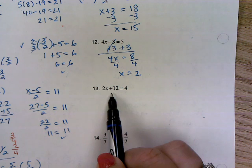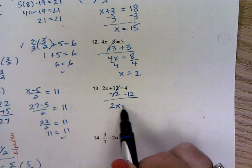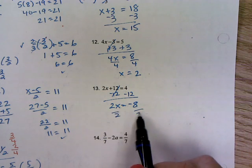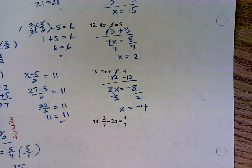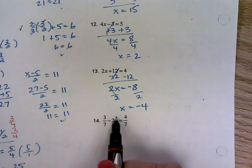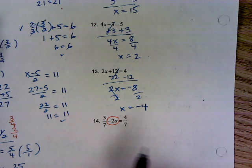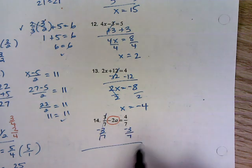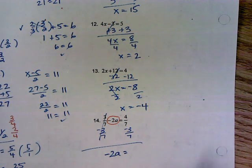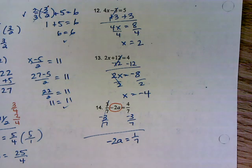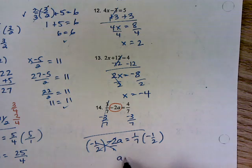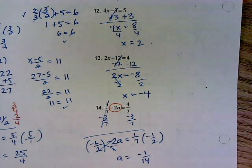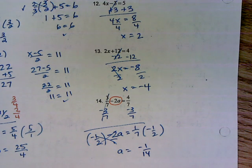On number 13, add or subtract first — I need to get rid of the 12. So 2x equals negative 8 — one-step multiplication, divide, and don't lose my negative. On this last one, I need to be careful: that is minus 2a. When I get rid of the 3 sevenths by subtracting it off, I have negative 2a — don't lose the negative. 4 sevenths minus 3 sevenths is 1 seventh. I'd like to divide both sides by 2, but I have a fraction, so I multiply by the reciprocal. Done. Be careful, take your time, and do what you need to do.